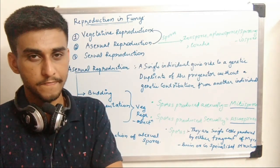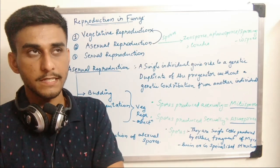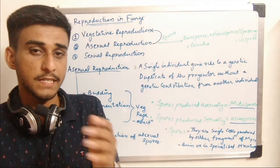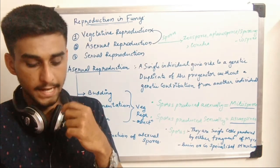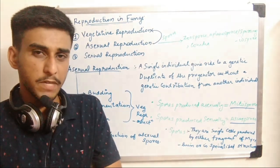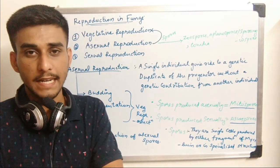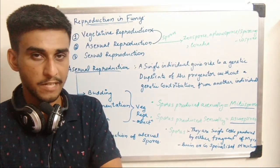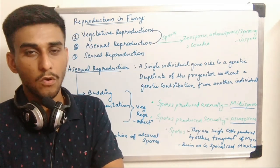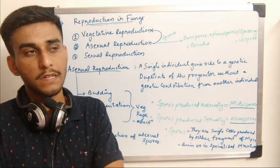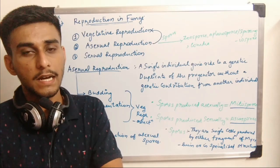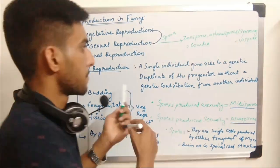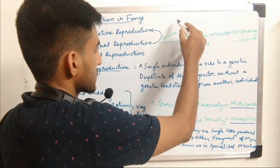Mitosis is the equational division, while meiosis is the reductional division which involves the production of gametes. During mitosis, if a cell is in diploid condition, the same diploid condition will be maintained after mitosis.